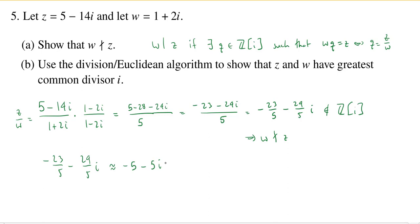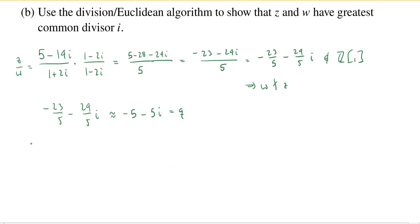All right, so even though we were not able to find the q that makes z equal to w times q, we found an approximate q. Okay, so this is going to equal our q. And so we could say, well, z is going to equal q times w, but plus some remainder, right? That's the division algorithm part of this, is we need to have some remainder.